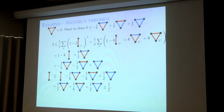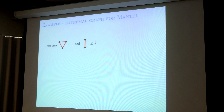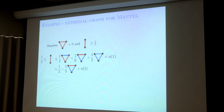In this way, flag algebra helps you prove some inequality. And actually, it can tell you more. Assume I have triangle density zero and edge density at least one-half. We know this is an inequality proved by flag algebra. If it is at least one-half, it tells you that one-half is less than or equal to one-half minus one-third of the cherry configuration. You can see this because the coefficient is one-sixth: just take one-half minus this. This implies that the cherry density is zero.